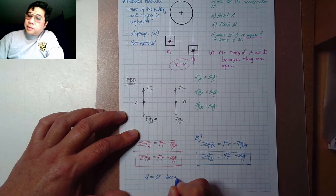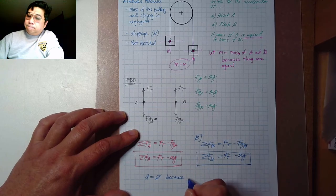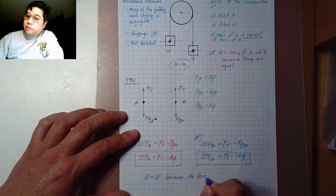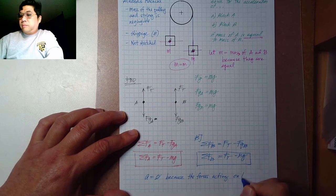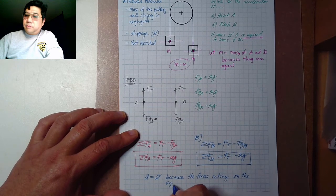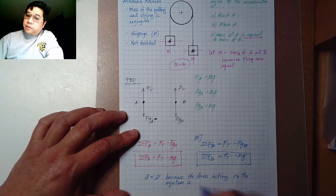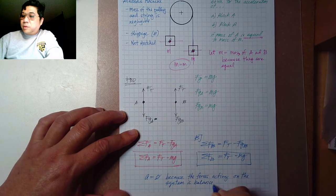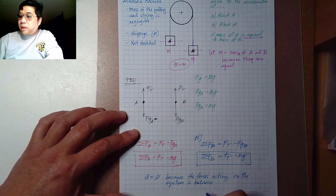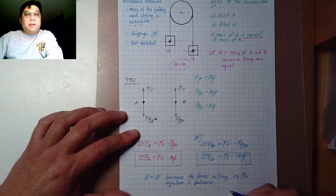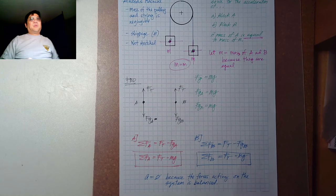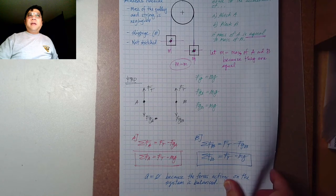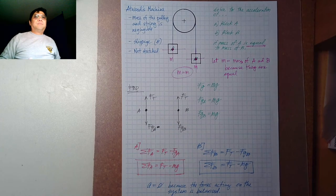The acceleration is zero because the forces acting on the system are balanced. There is no presence of an unbalanced force, and therefore the acceleration is zero. Simple — hope you understand it. See you with the next problem.